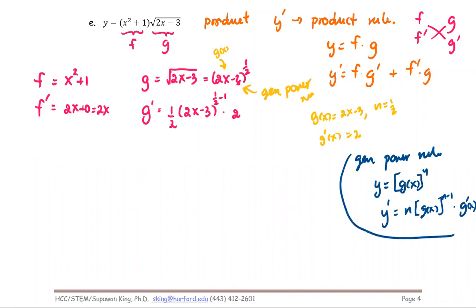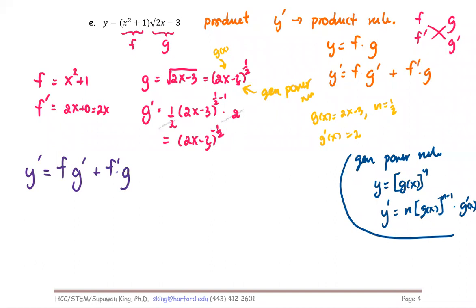After simplifying — canceling the two and two — the g prime simplifies to the quantity two x minus three to the power negative one half. Now we fill in the product rule: y prime equals f times g prime plus f prime times g, which is (x squared plus one)(2x minus 3)^(−1/2) plus 2x times (2x minus 3)^(1/2).